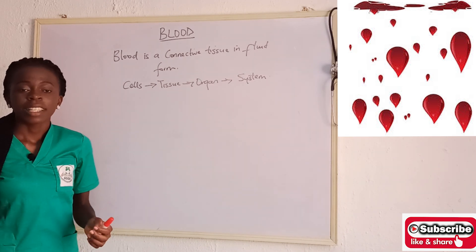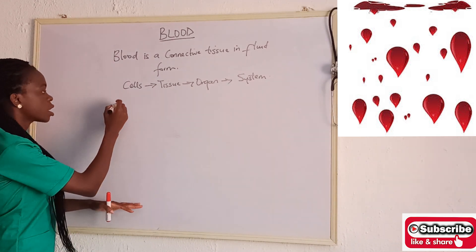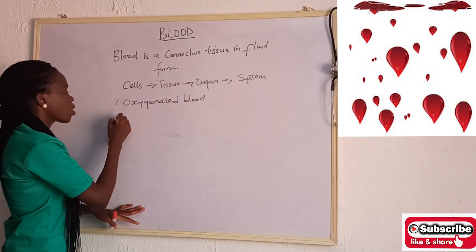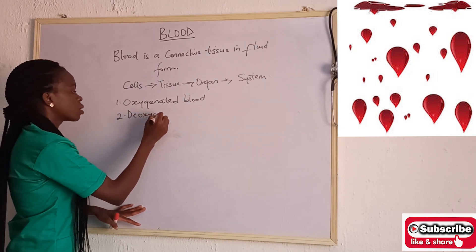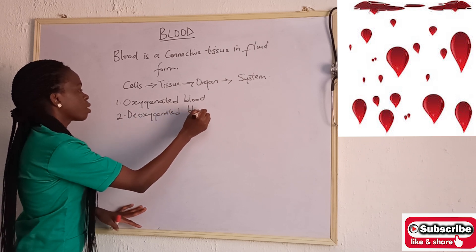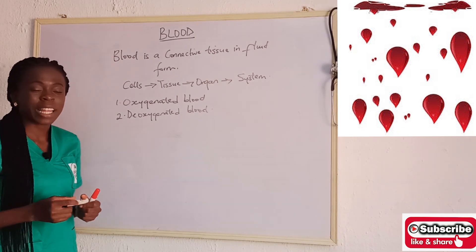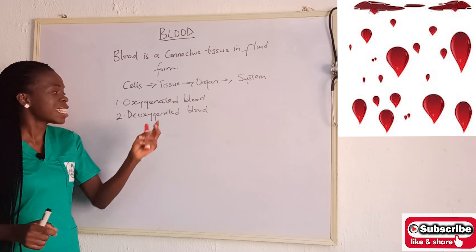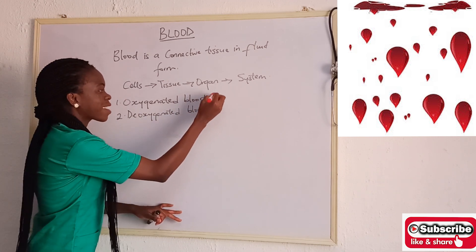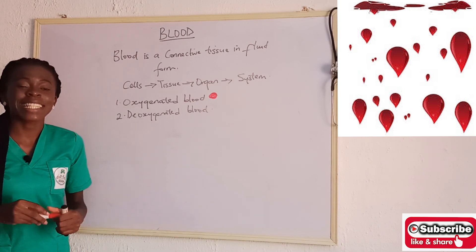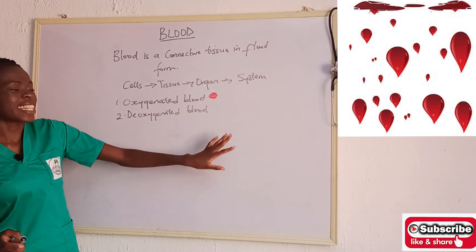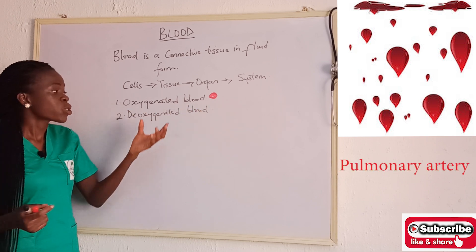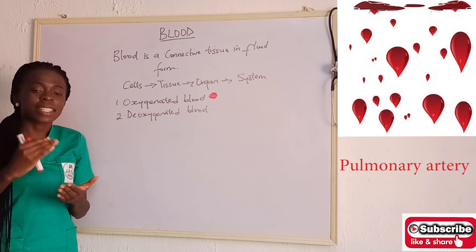There are actually two types of blood. We have the oxygenated blood and the deoxygenated blood. Oxygenated blood, as the name implies, has a lot of oxygen in it along with plenty of nutrients, so it is fresh. This blood is bright red and it is found in all arteries except one — the pulmonary artery. So oxygenated blood is found in all arteries except the pulmonary artery.